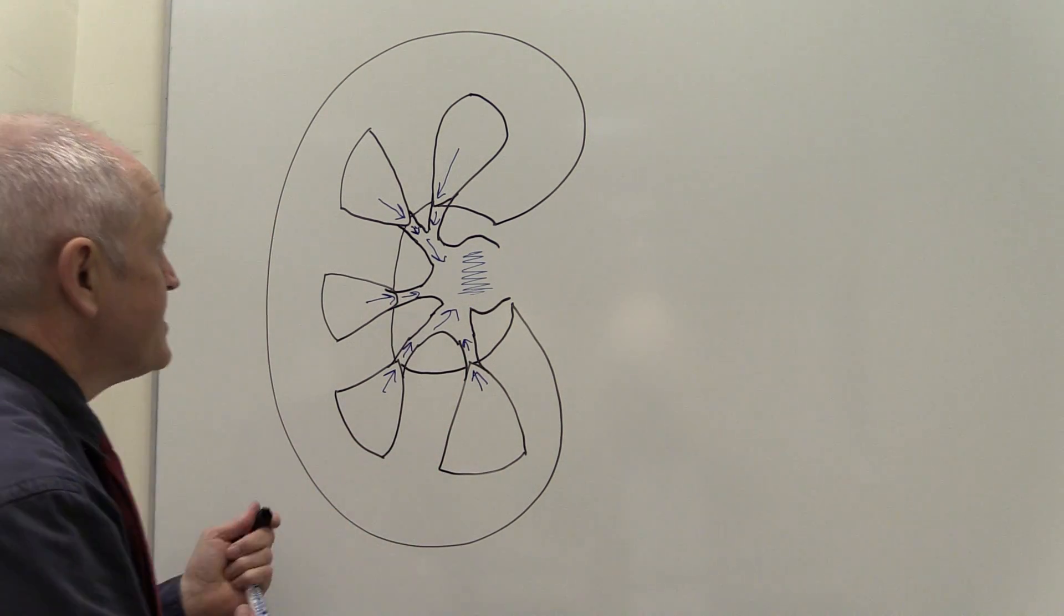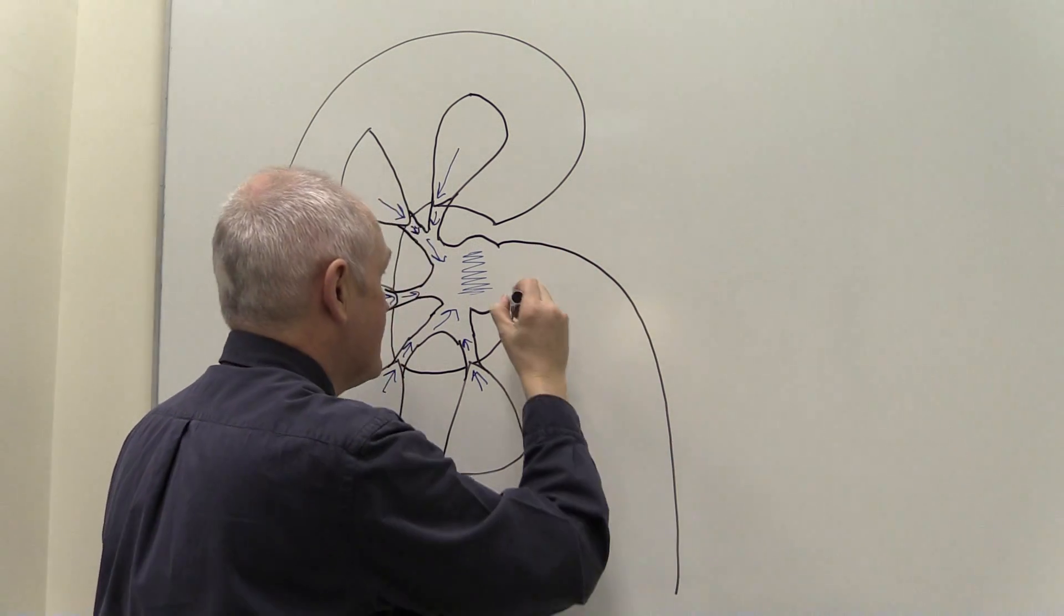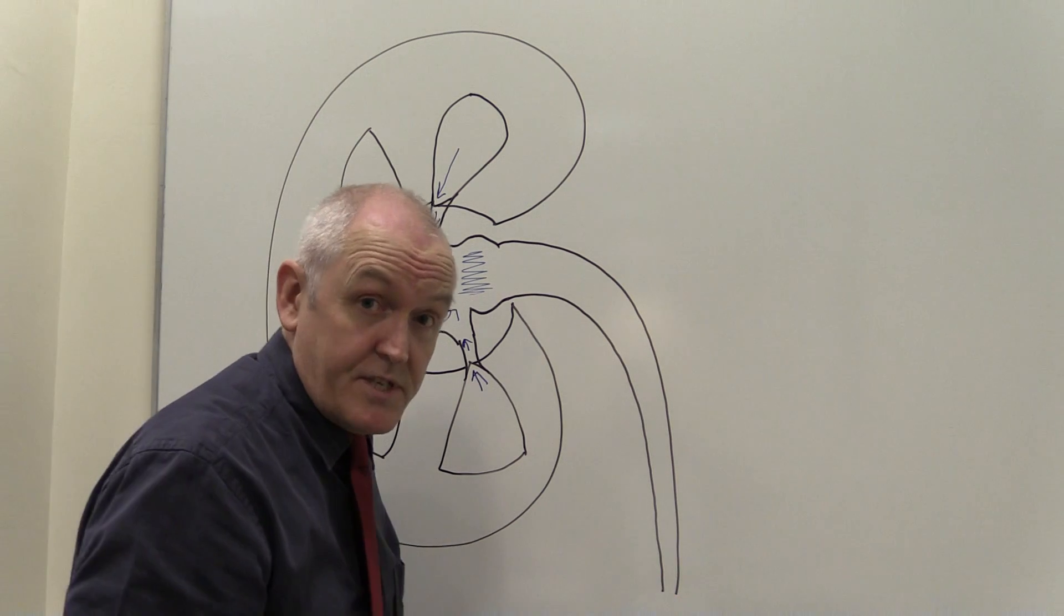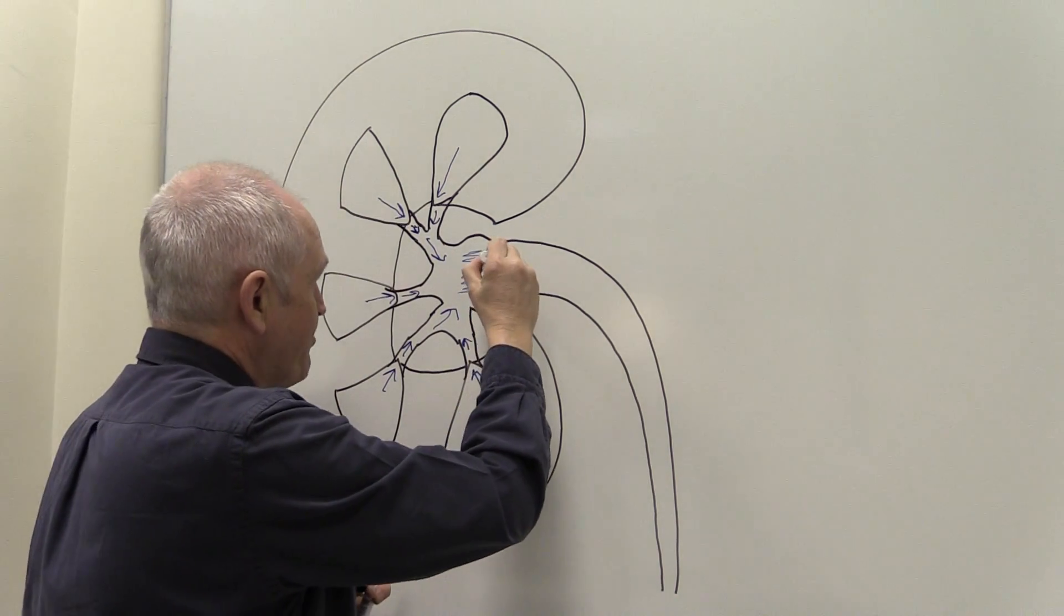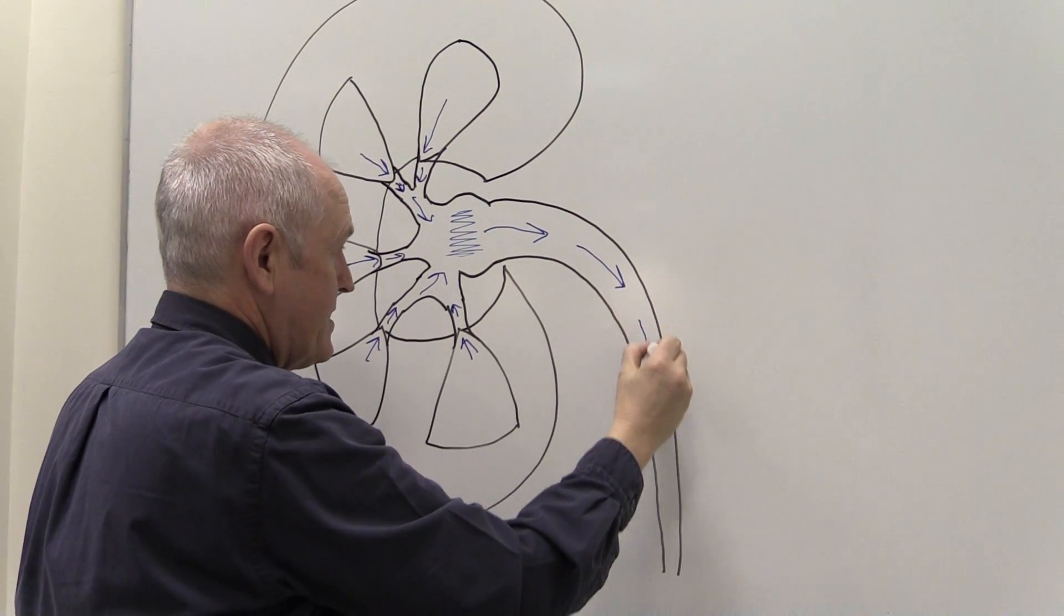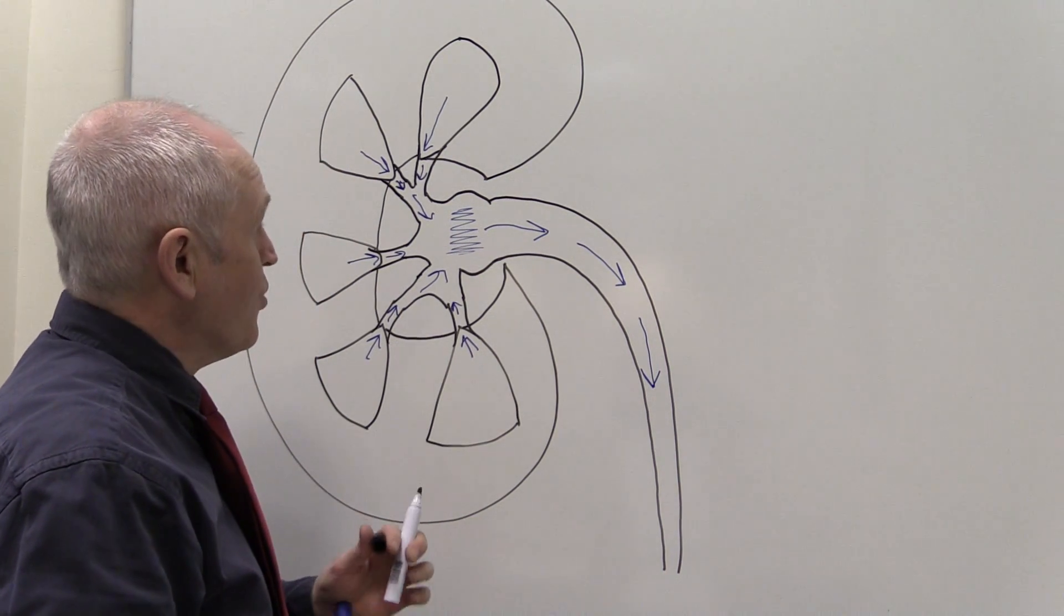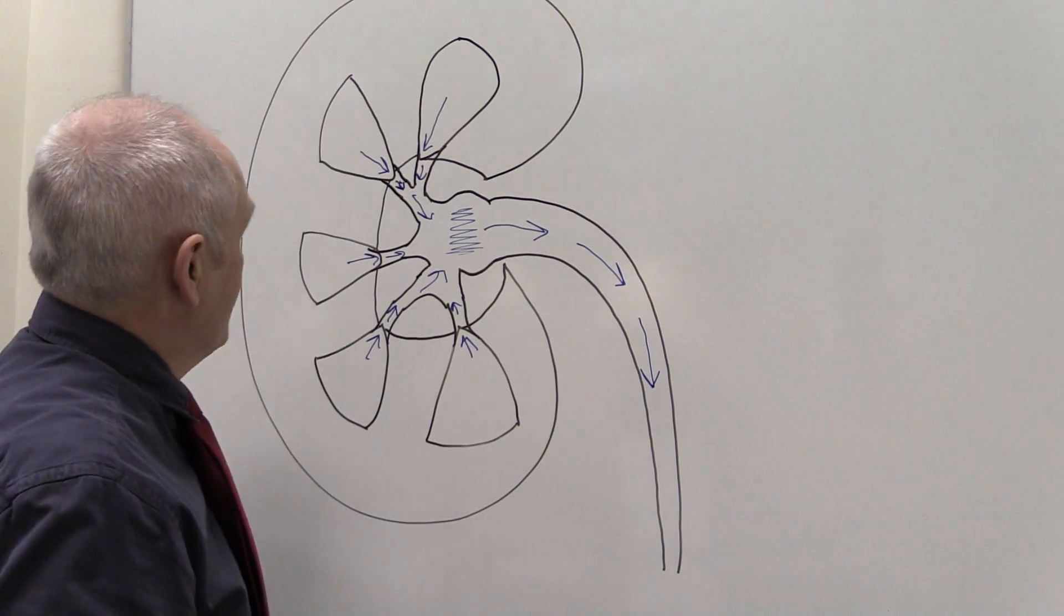And then the renal pelvis is going to exit the kidney at the start of the ureters. So the ureter is going to go from the renal pelvis down into the ureter, and the ureter has muscular peristaltic walls taking the urine down to the bladder.